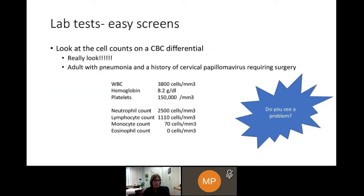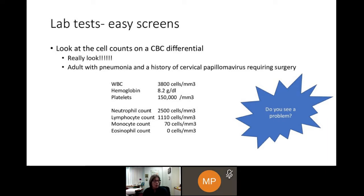I'm going to start with lab tests that are widely available. Starting with the CBC — which might seem mundane, but we have to be very methodical and thorough in the way we look at a CBC and differential. Here is an adult I diagnosed about a year ago. She had a history of a single pneumonia and came to me because she had cervical papillomavirus that had required surgery. She is 20 years old. I want you to take a look at her CBC and absorb those numbers methodically, and notice what looks abnormal.